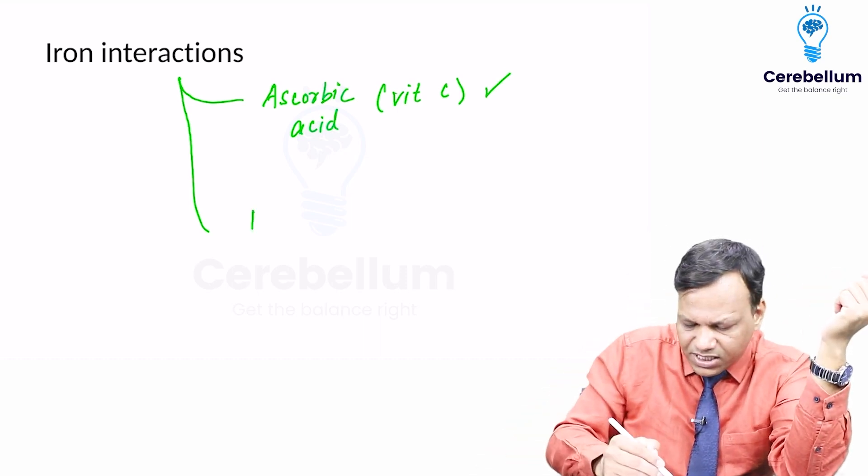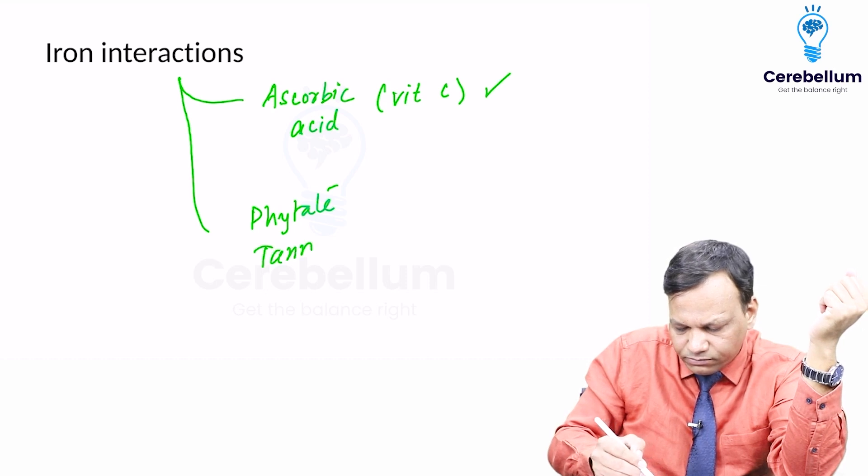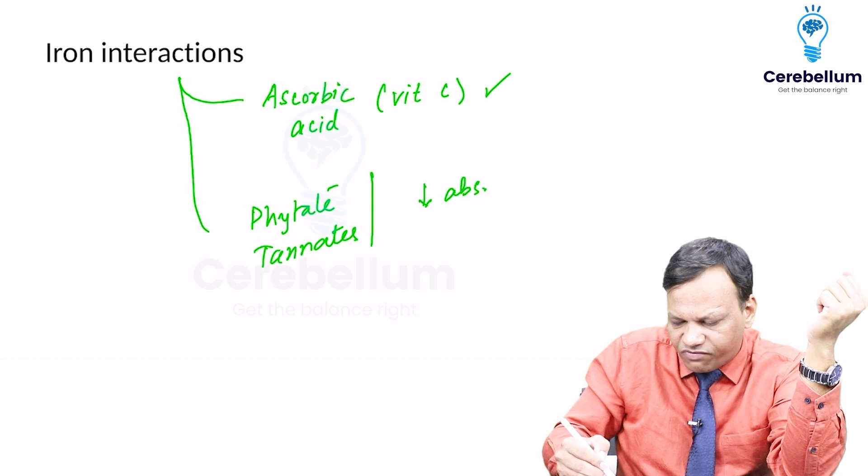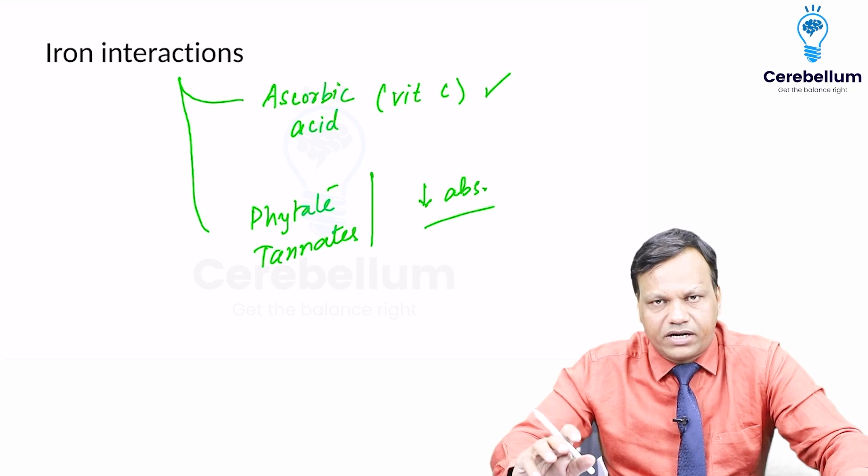On the other hand, substances like phytates and tannates decrease the absorption of iron. So tea, coffee, etc. should not be taken with iron therapy, otherwise absorption will be hampered.